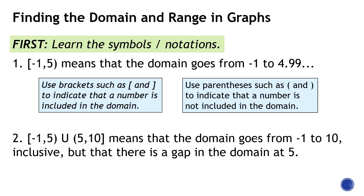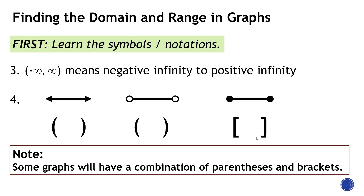Now let's learn the symbols for interval notation. The notation from negative 1 to 5 with a parenthesis means the domain goes up to 4.999 — five is not included. A union symbol means there is a gap in the domain at that point. When you see an arrow or the graph continues, you use a parenthesis with infinity. An open circle on a graph means use a parenthesis; a closed or shaded circle means use a bracket. Some graphs will have a combination of parentheses and brackets.